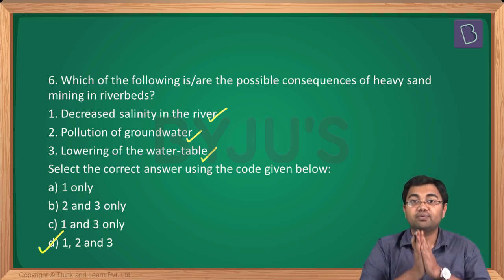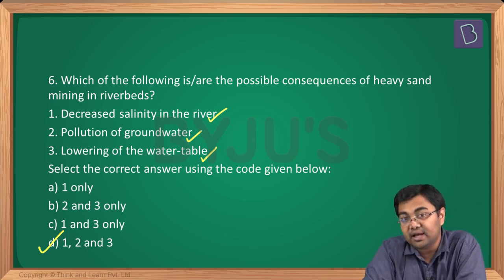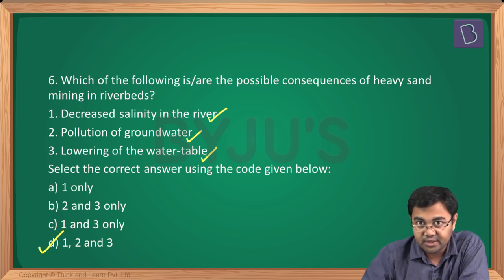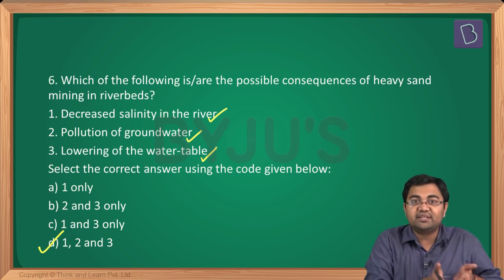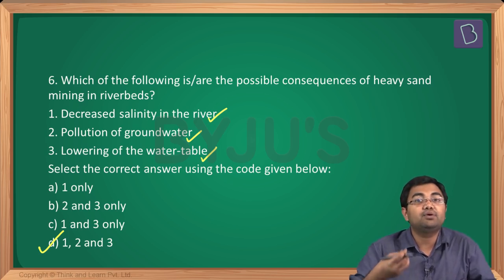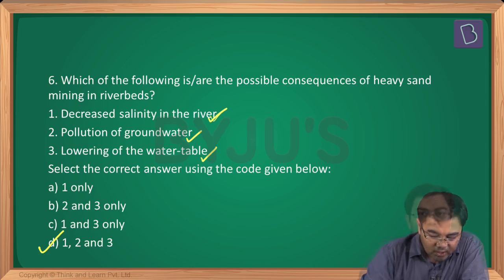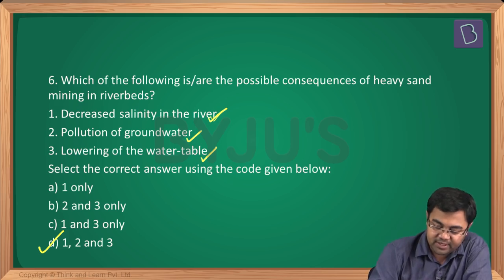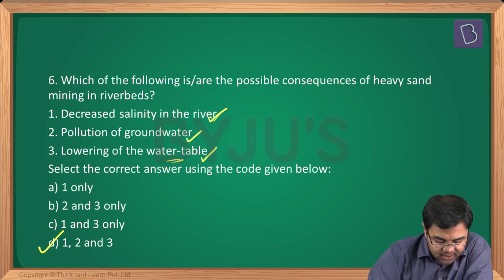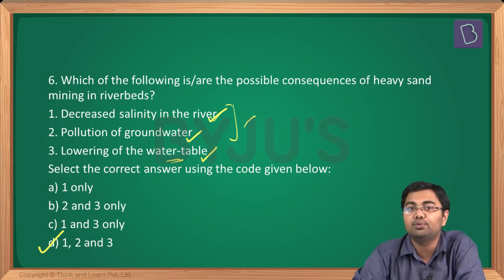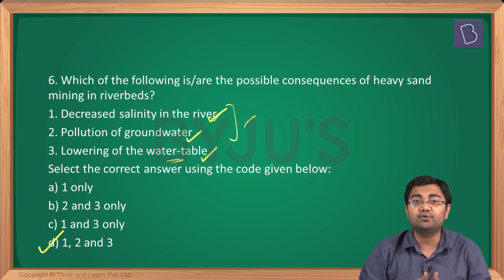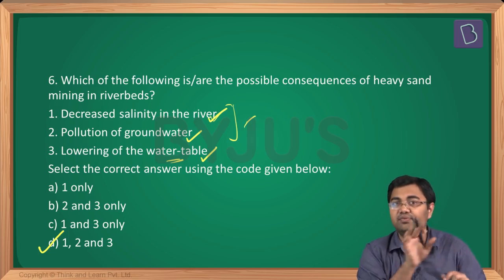With sand mining near coastal areas, when you take out sand in large amounts, seawater rushes into the riverbed and salinity of the river increases — so statement 1 is true. Pollution of groundwater also happens because of sand mining. Even if you only knew statements 1 and 2 were correct, since there is no option saying '1 and 2 only,' the answer must be 1, 2 and 3. This is a useful exam strategy — if you are confident about two statements and no option matches just those two, the answer including all three is likely correct.